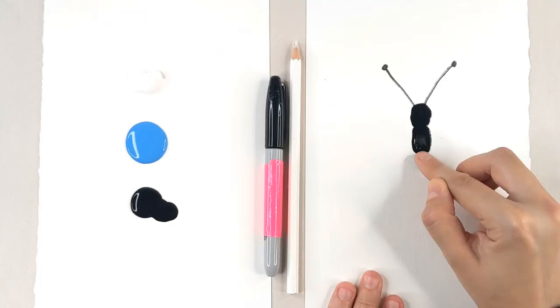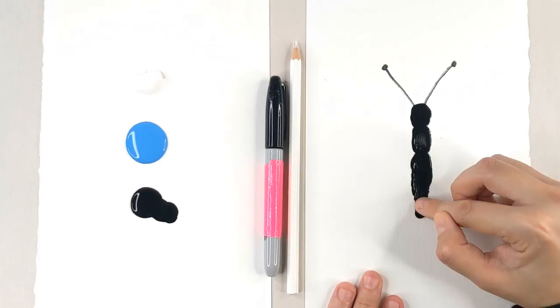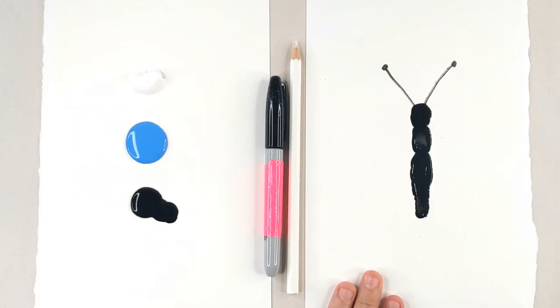So a little dot, a slightly bigger dot, and then we're going to do a really long stroke with our finger like so. So that is the main part of our butterfly and now we're going to do the outside of the butterfly.